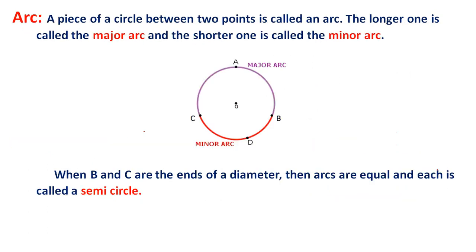An arc is a piece of a circle between two points. The longer one is called the major arc, and the shorter one is called the minor arc. When B and C are the ends of a diameter, then arcs are equal and each is called a semicircle.